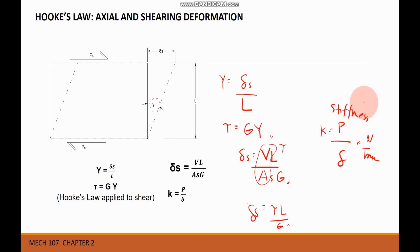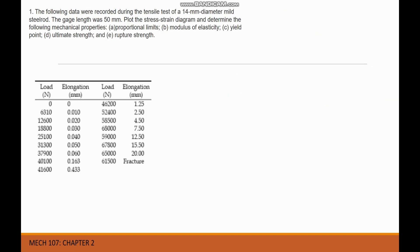To further understand these concepts, let us proceed to our first example. The following data were recorded during a tensile test of a 40 mm diameter mild steel rod. The gauge length was 50 mm. We need to plot the stress-strain diagram and determine: the proportional limit, modulus of elasticity, yield point, ultimate strength, and rupture strength.